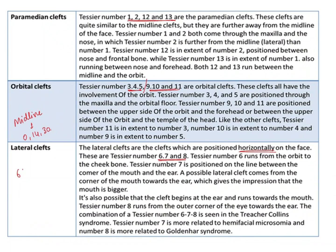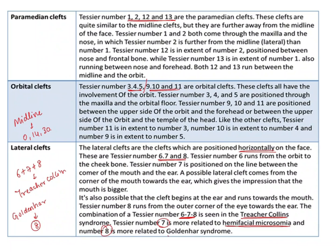An important point: lateral clefts 6, 7, and 8 are all encountered in Treacher-Collins syndrome, also known as mandibulofacial dysostosis. In hemifacial microsomia, you see type 7 cleft. In Goldenhar syndrome — oculoauriculovertebral dysplasia, which is associated with hemifacial microsomia — type 8 Tessier's cleft is typically demonstrated. So: types 6, 7, 8 in Treacher-Collins; type 7 in hemifacial microsomia; type 8 in Goldenhar syndrome.